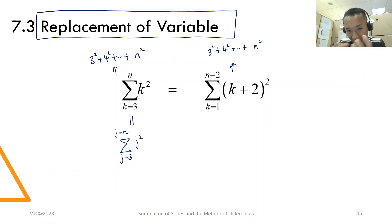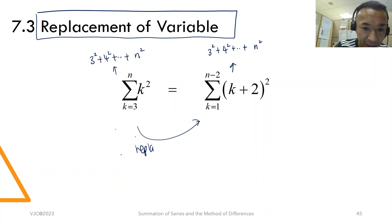Now, I can replace k with j, sorry, I beg your pardon, k with k plus 1, k plus 2. So, the killer move here is this. I will replace k with k plus 2.